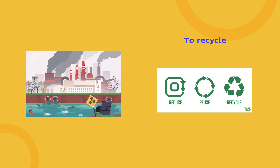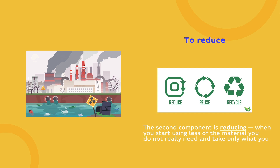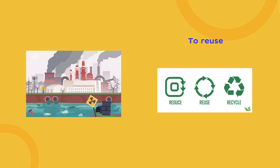To recycle — the first one is recycling, when you take the material you no longer need and use it to make another material you need. To reduce — the second component is reducing, when you start using less of the material you don't really need and take only what you need for living. To reuse — the third one is reusing, when you use something again, more than once.